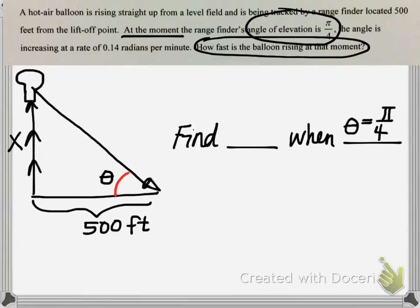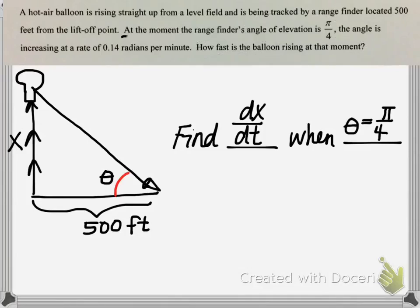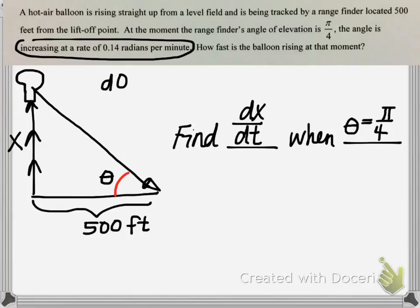How fast the balloon is rising is how fast x is changing — the distance between the balloon and the ground. So we're looking for dx/dt, the rate at which x is changing when theta is π/4. We also have that dθ/dt equals 0.14 radians per minute — that's the rate at which theta is changing. Now we just need a relationship between the variables in the problem.